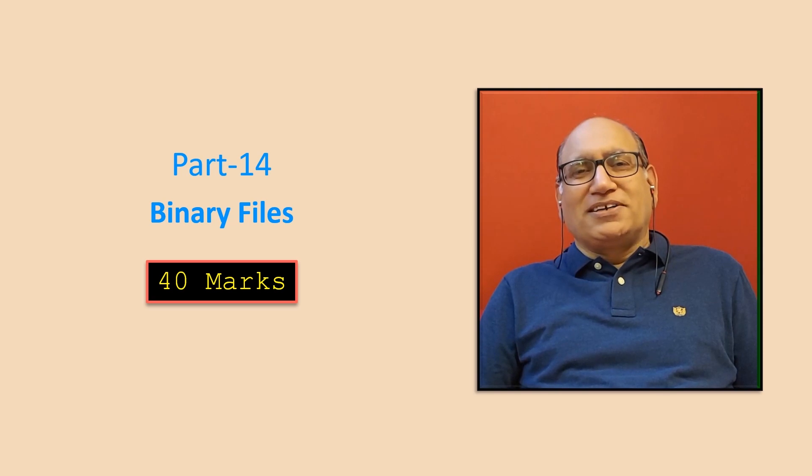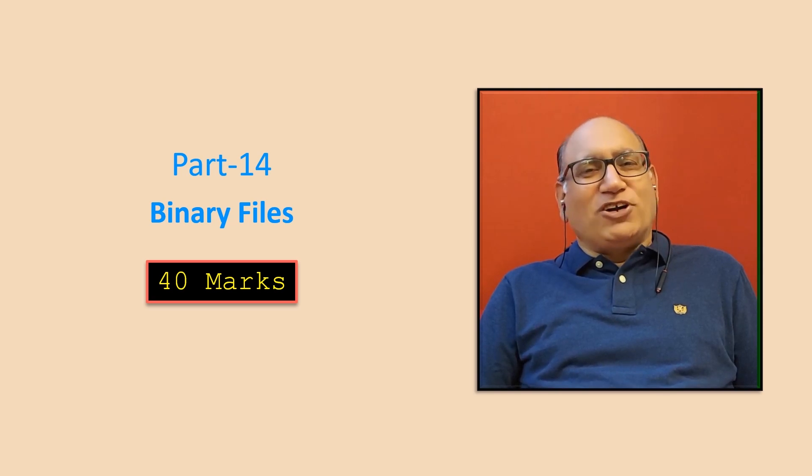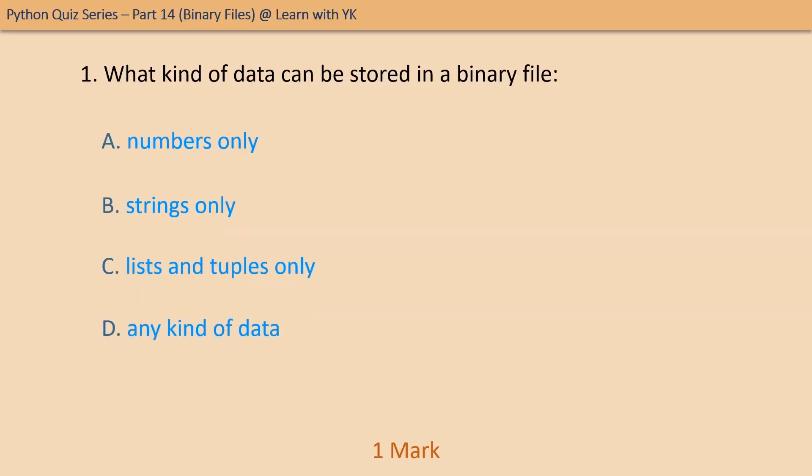Ready for the quiz? Here is the first question: what kind of data can be stored in a binary file? Pick the correct option. The correct option is option D — any kind of data can be stored in a binary file.